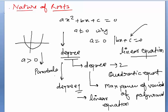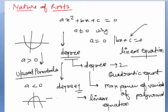This graph is also called a parabola. If a is greater than 0, it is called an upward parabola. The second condition is a less than 0 — in that case the graph opens downward and is called a downward parabola. In this video we will discuss the nature of roots.